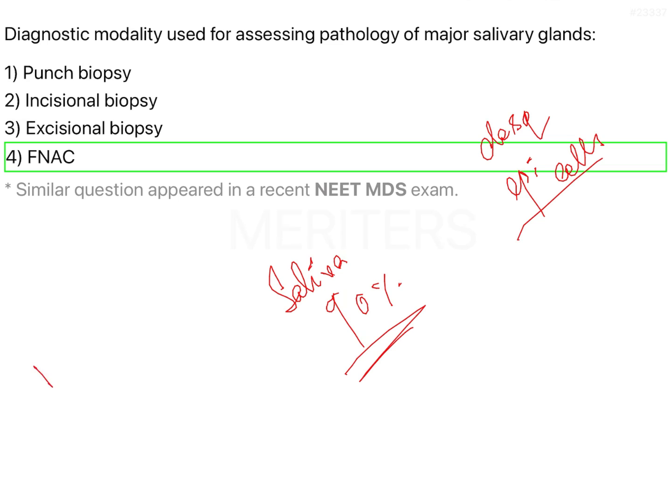FNAC is also known as fine needle aspiration cytology. What exactly happens in FNAC is you take a needle which is somewhere around 30 gauge, apply topical local anesthesia, and you slowly insert the needle into the area of concern — in this case, the salivary glands, let's say the parotid gland.